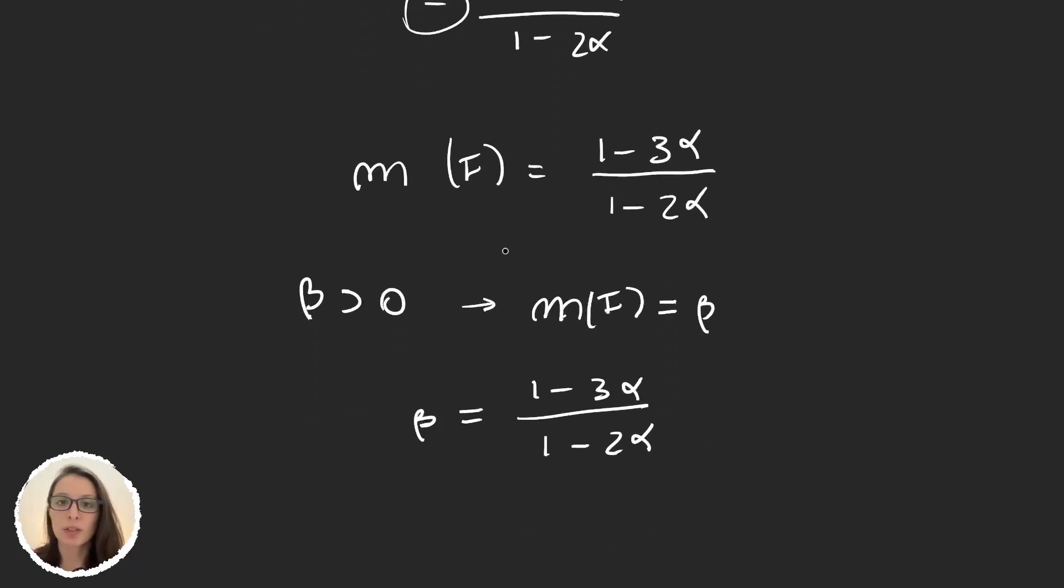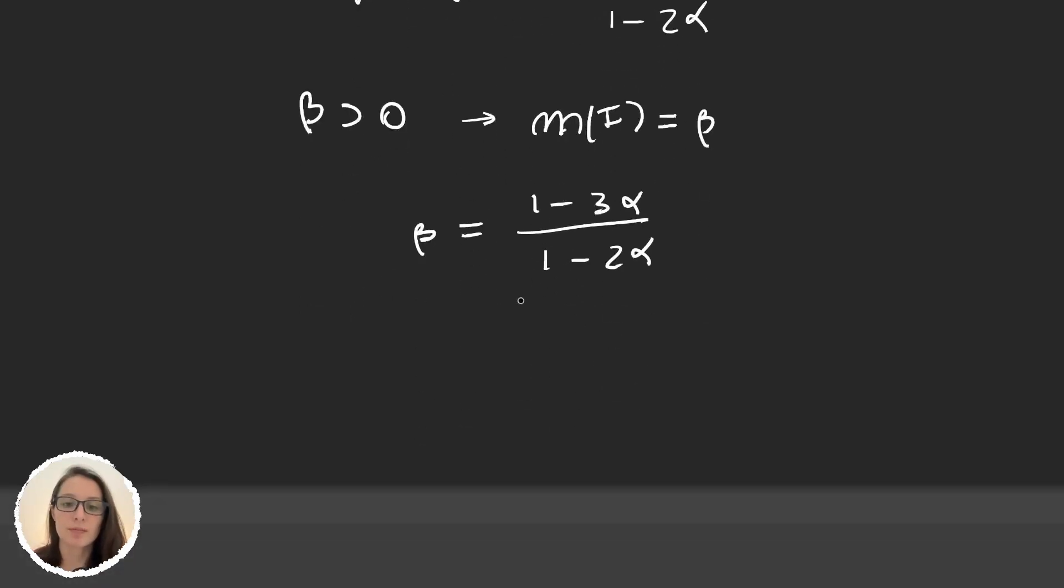And so α was the ratio that we are using to remove intervals from [0,1]. So here we can actually isolate the α.